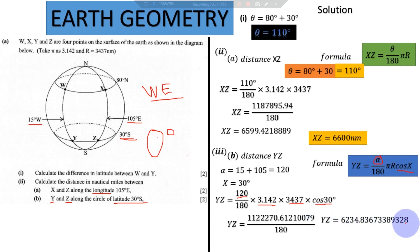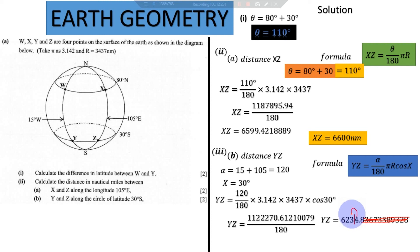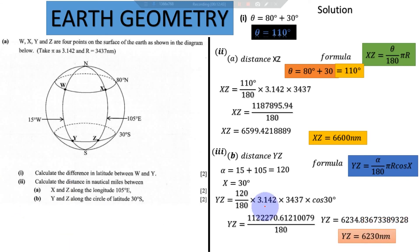Remember our instructions say to leave answers to three significant figures if they are not exact. The integral part of this result is in the thousands, so decimal places are not needed. Counting three significant figures: one, two, three — I stop there. Four is less than five so I cannot add one to three; the four becomes zero, the three remains three, and the six remains six. The final answer is 6,230 nautical miles.